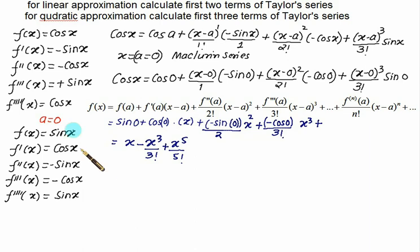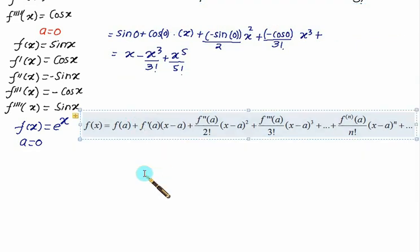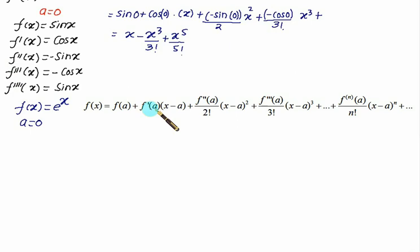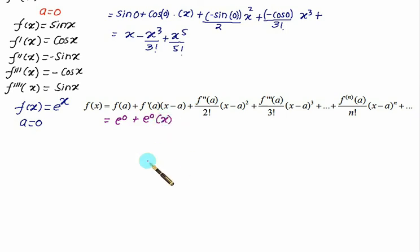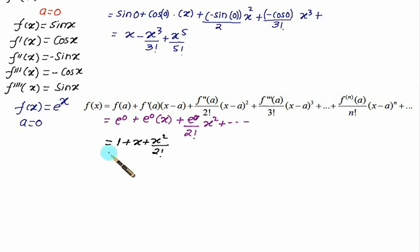Take another example: f(x) = e^x at a = 0. All derivatives of e^x remain e^x. So f(a) = e^0 = 1, the first derivative term gives e^0 times x = x, the second derivative gives e^0 divided by 2 factorial times x², and so on. Solving this, we get the standard expansion: 1 + x + x²/2! + x³/3!, which is the standard Taylor series for e^x.